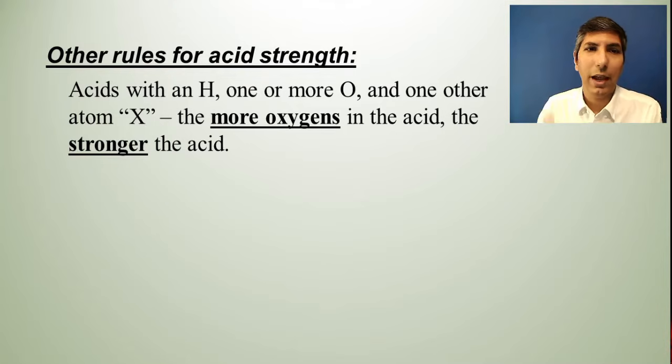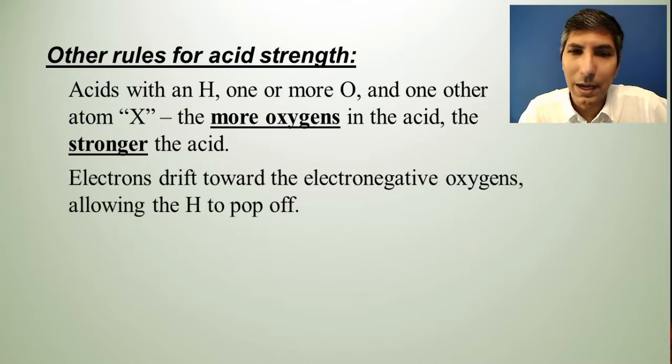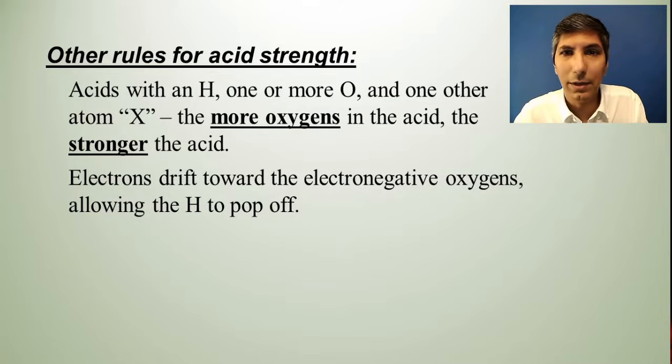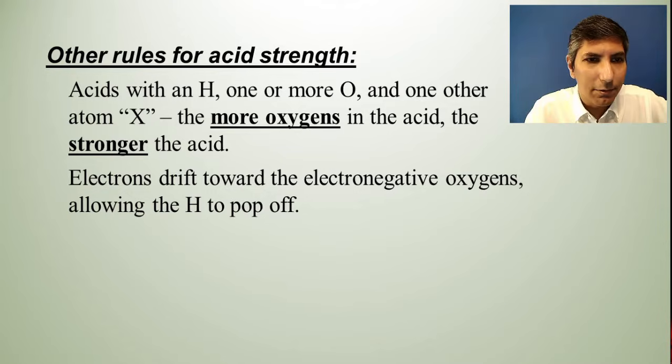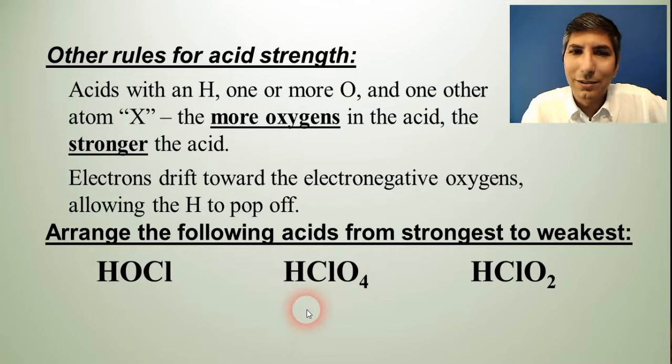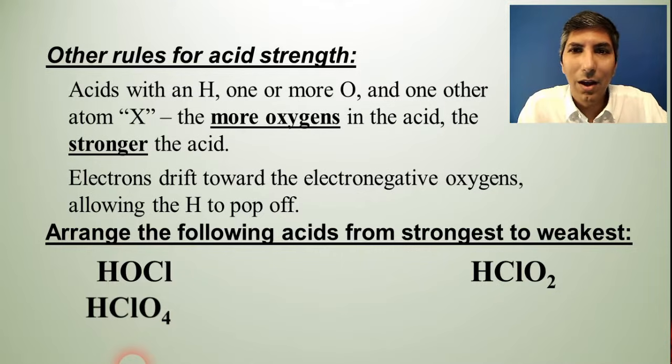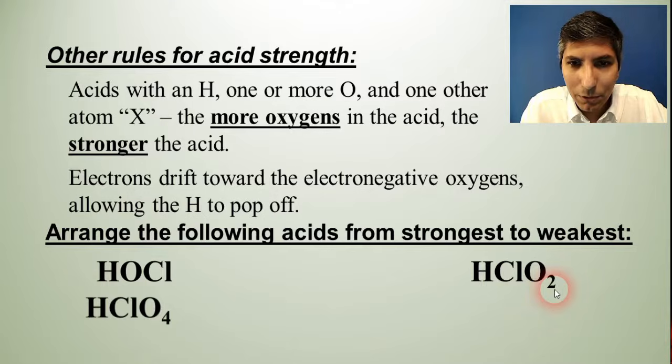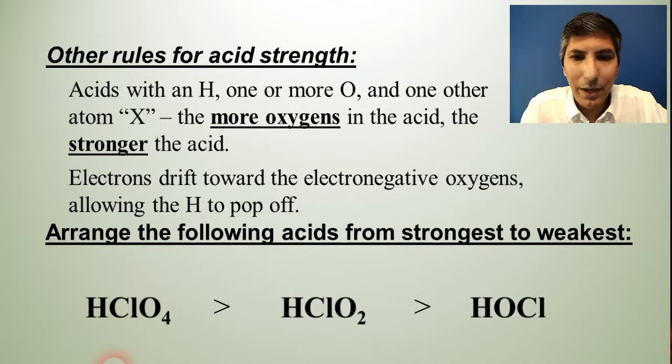Here's another rule. If you have an acid with H, one or more oxygen, and then another atom, which we'll call X, the more oxygens the acid has, the stronger the acid is going to be. And that's because oxygen just unto itself is a very electronegative atom. And so the electrons are going to drift toward those oxygens, and that's going to allow the hydrogen to pop off or to leave. So if we have this combination here, or these three acids, they all have H and Cl, but they have different numbers of oxygens. Well, the one that has the most oxygens is the strongest. So that's HClO4. And that makes sense because perchloric acid is a strong acid. We actually have that on our list of the big six. And then HClO2, chlorous acid would be the next strongest. And then HOCl or HClO, however you want to write that, hypochlorous acid is a fairly weak acid. And we see that because it has fewer oxygens.